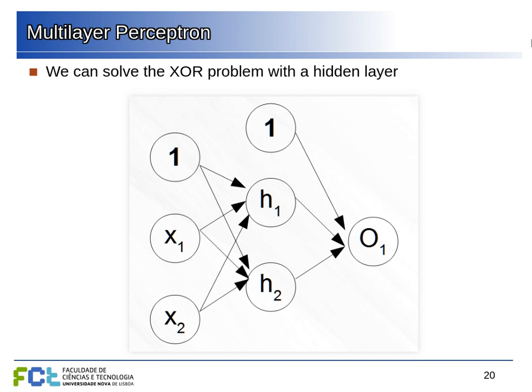This network can solve the exclusive OR problem. We have one hidden layer formed by two neurons — they receive the input values from the input layer and feed into one additional output neuron. So our network has three neurons whose weights we can adjust.